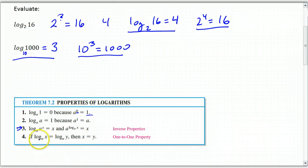And finally, if I have a log of X base A equal to a log of Y base A, so in other words, if these two bases are the same, then I can just drop the logs and set the X equal to the Y. That's called the 1 to 1 property.